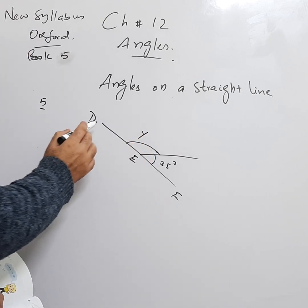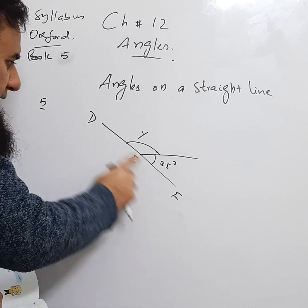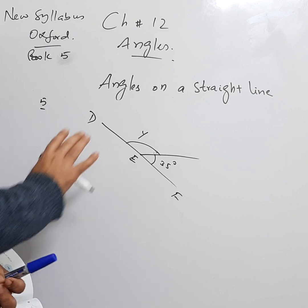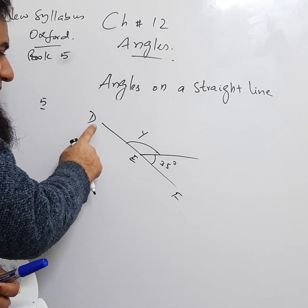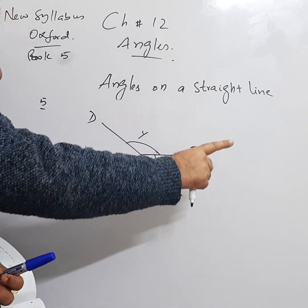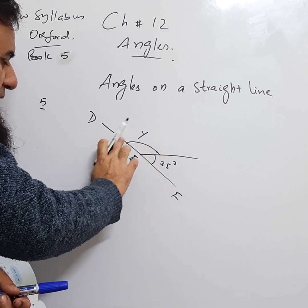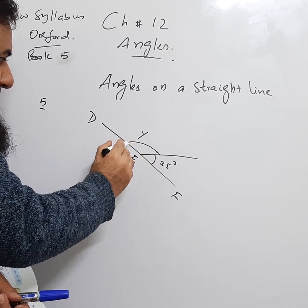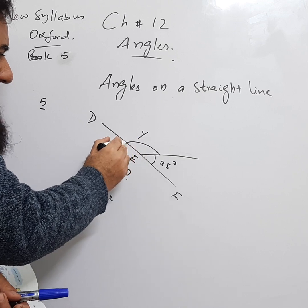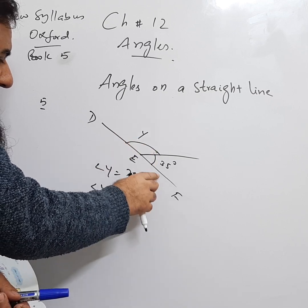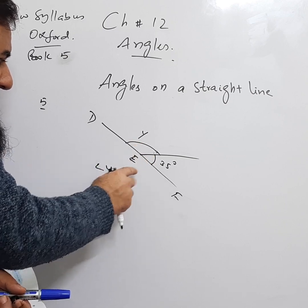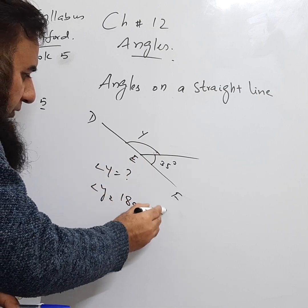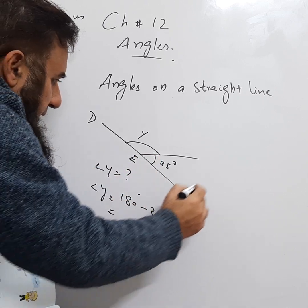It is given that DEF is a straight line. We know that angles on a straight line are equal to 180°. So the whole semicircle is 180°. To find angle y, we subtract 35°: 180° minus 35° equals 145°.